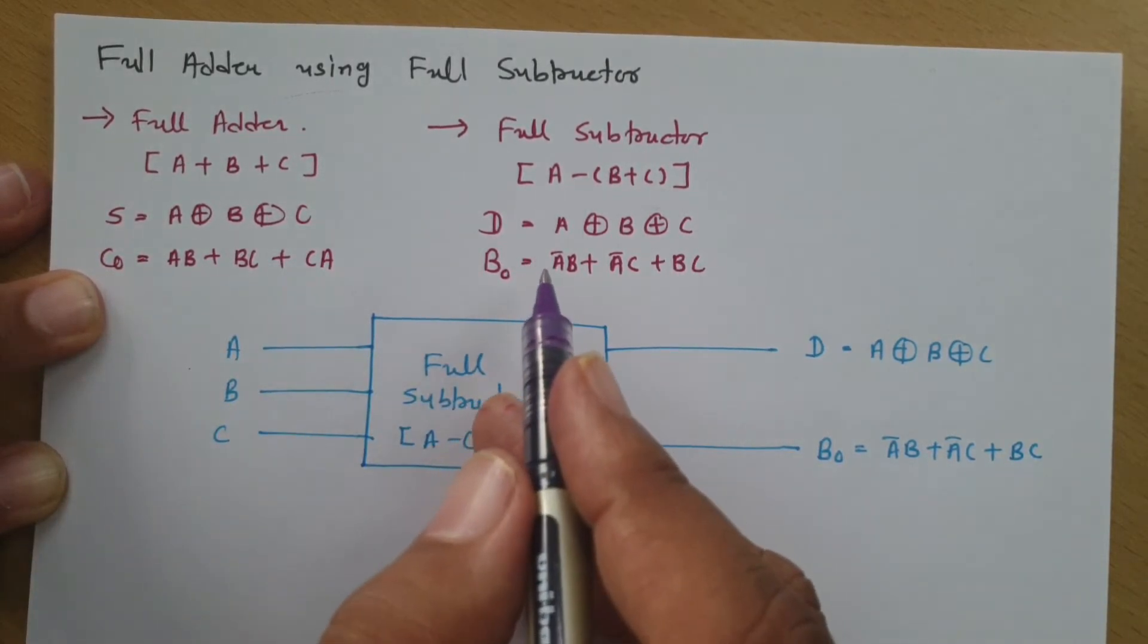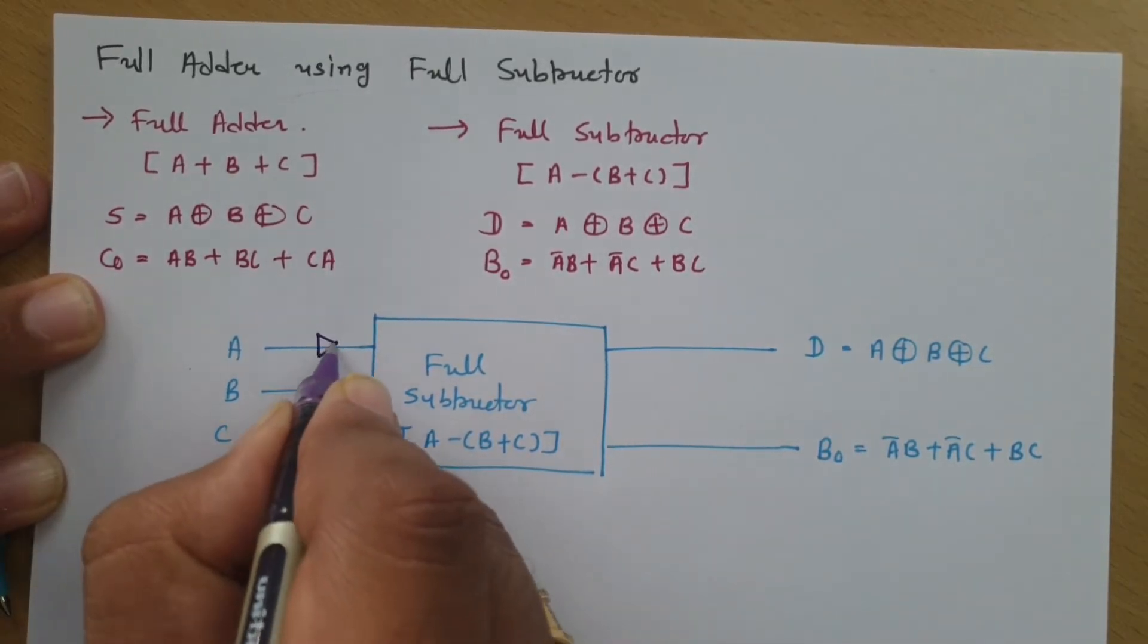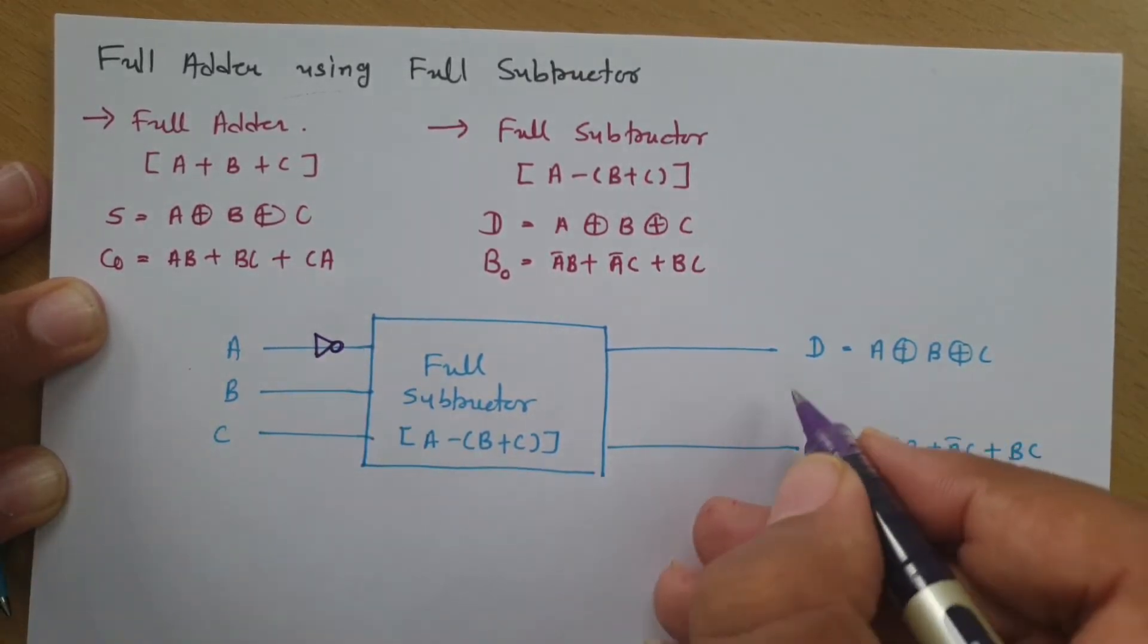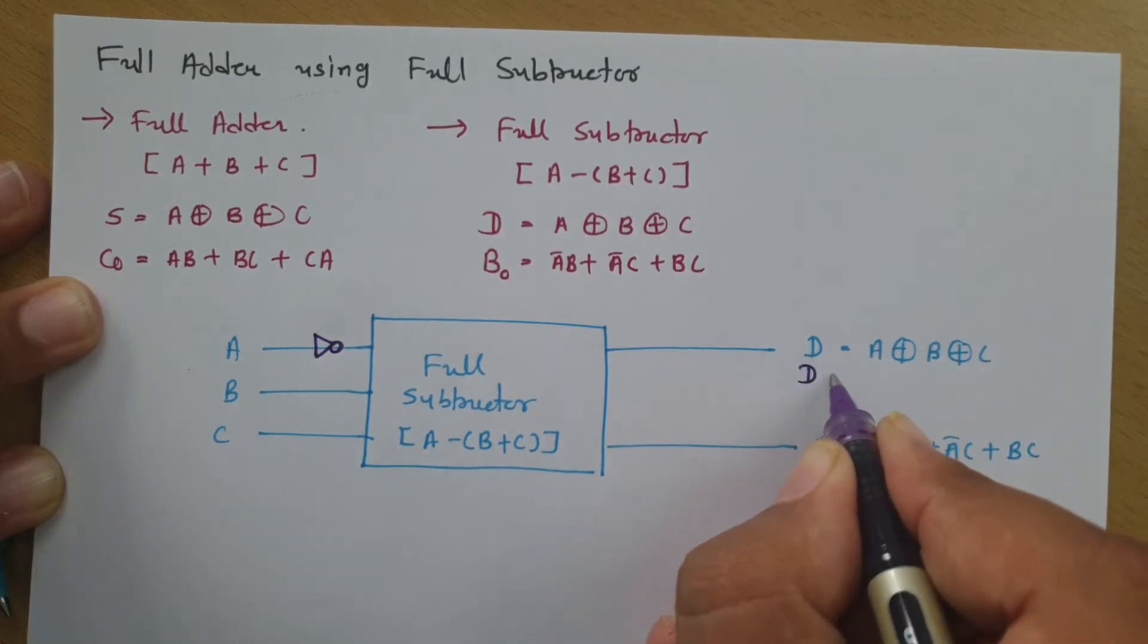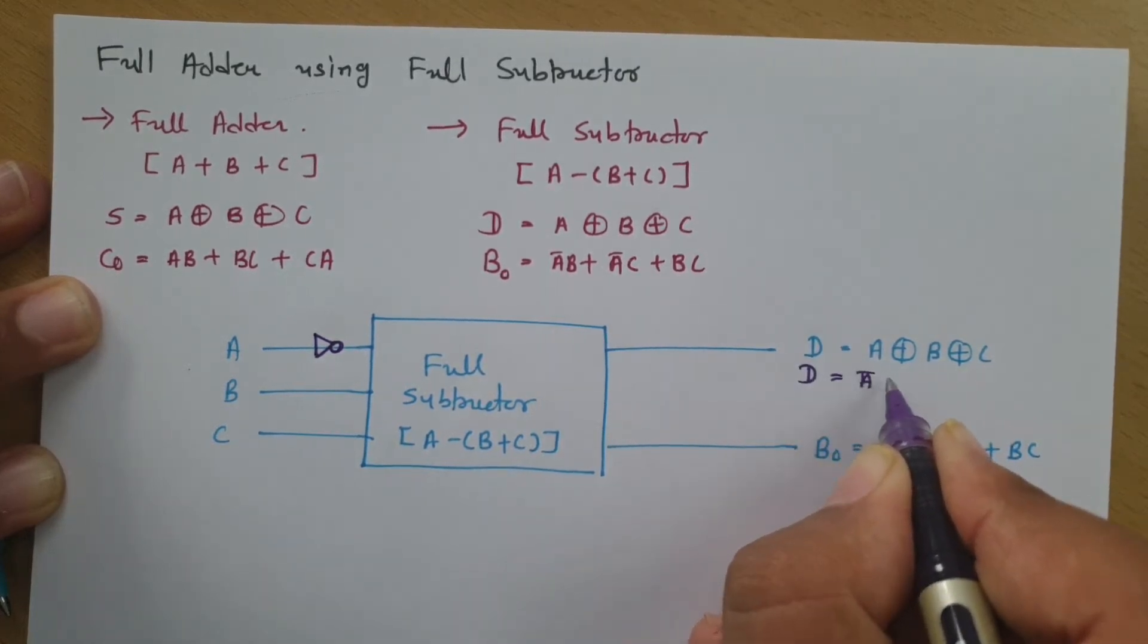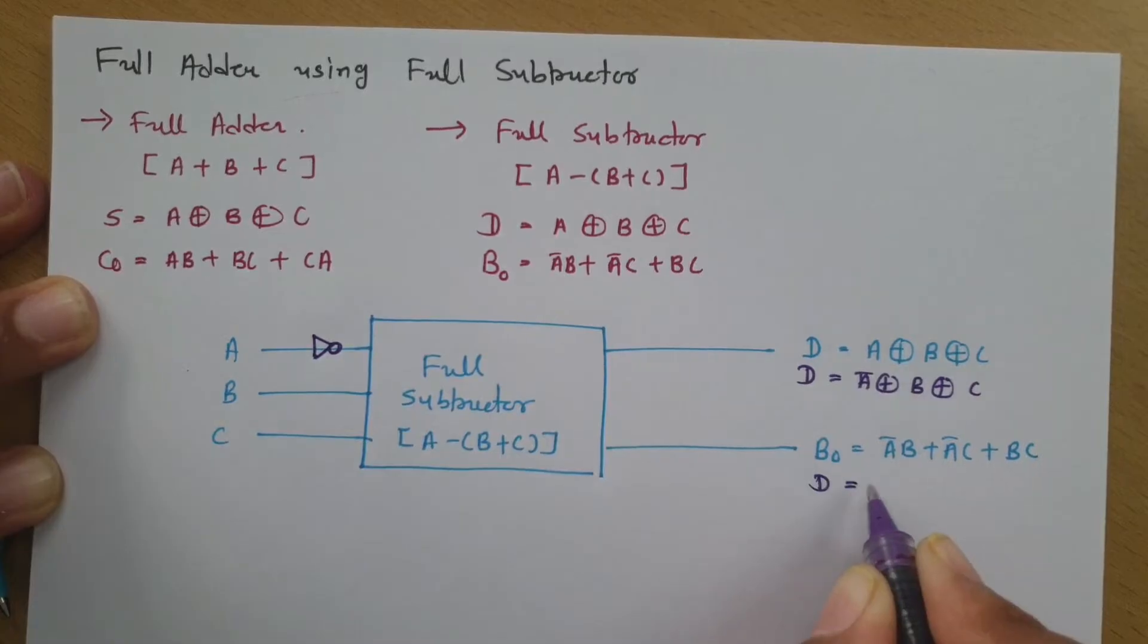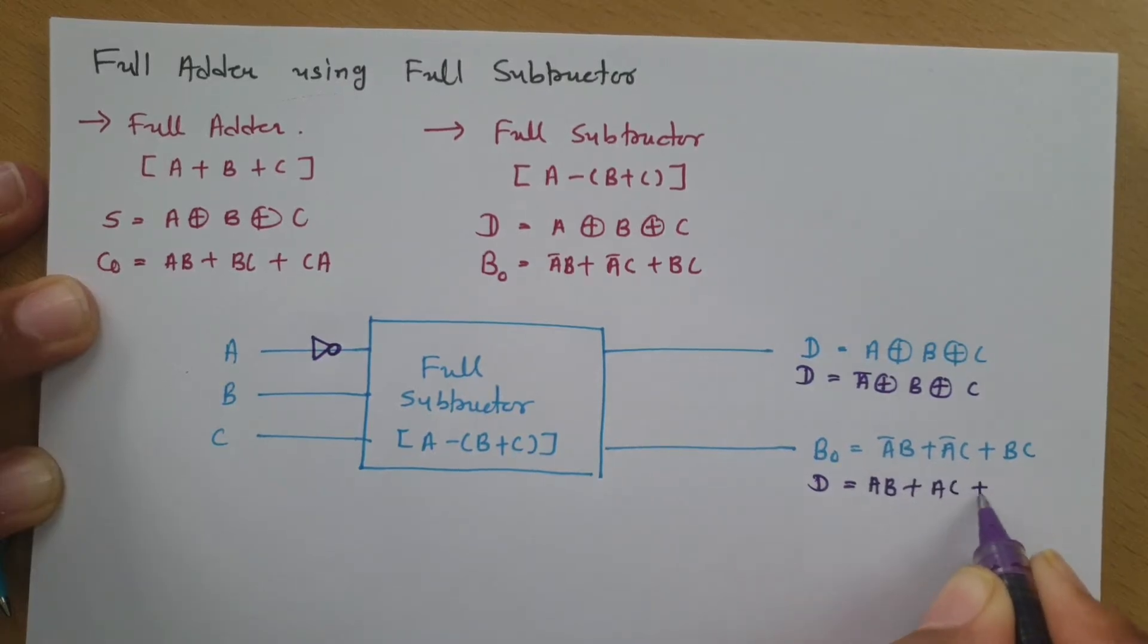So, we just need to replace A with A bar. And to have it first, I will be connecting one NOT gate over here. So, if I connect one NOT gate over here, this signal will get changed. Now, this signal will be A bar XOR B plus C and if you see this signal, then that signal will be A bar B plus AC plus BC.